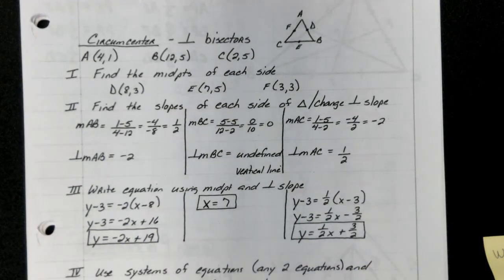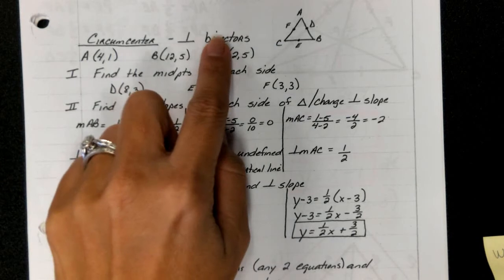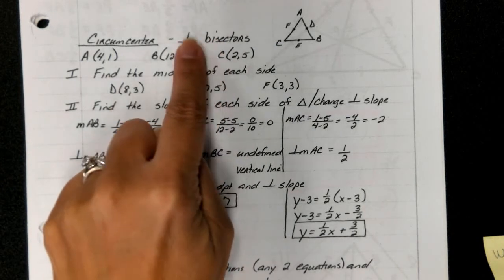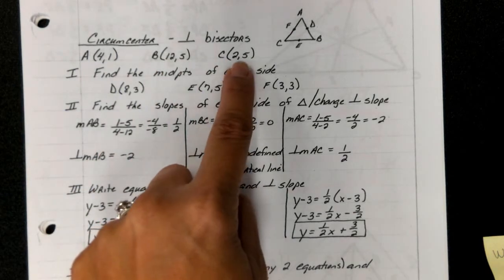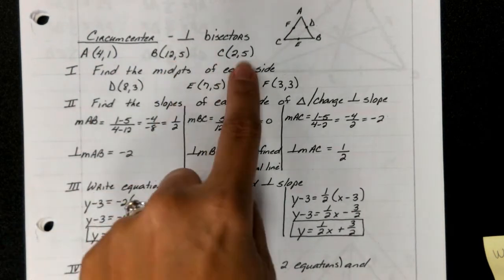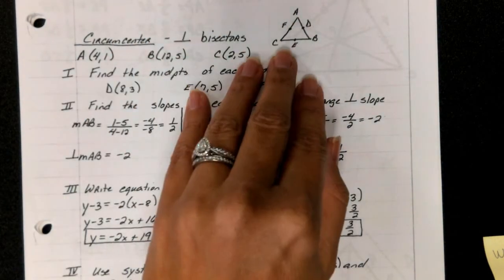Okay guys, so for the past couple of days we've talked about special line segments, their points of concurrency, and their properties. Today we are actually going to find the x and y value of that point of concurrency. If I'm giving you a circumcenter, we know that his special line segment is a perpendicular bisector, and I'm going to give you the points of the vertices of the triangle: (4,1), (12,5), and (2,5). At this point, get some paper and work this problem step by step with me.